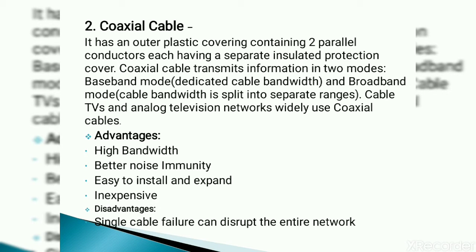Next is coaxial cable. It has an outer plastic covering containing two parallel conductors, each having separate insulating protection. Coaxial cable transmits information in two modes: baseband mode and broadband mode. The wire is situated in the middle, and above it there is a plastic or metal shield insulated over the copper wire — the wire is fixed at the center, which is why it is named coaxial cable. Advantages: high bandwidth, better noise immunity, easy to install, inexpensive. Disadvantage: a single cable failure disrupts the entire network.